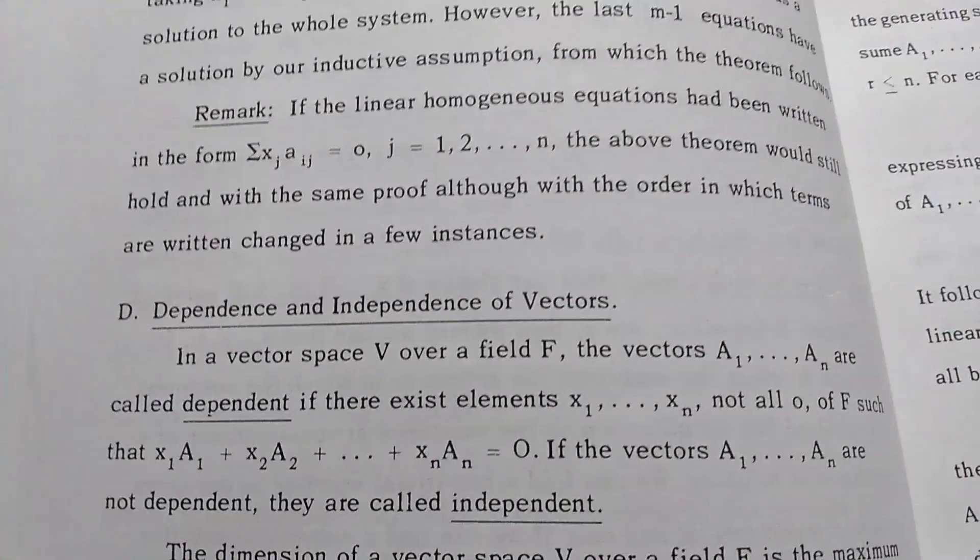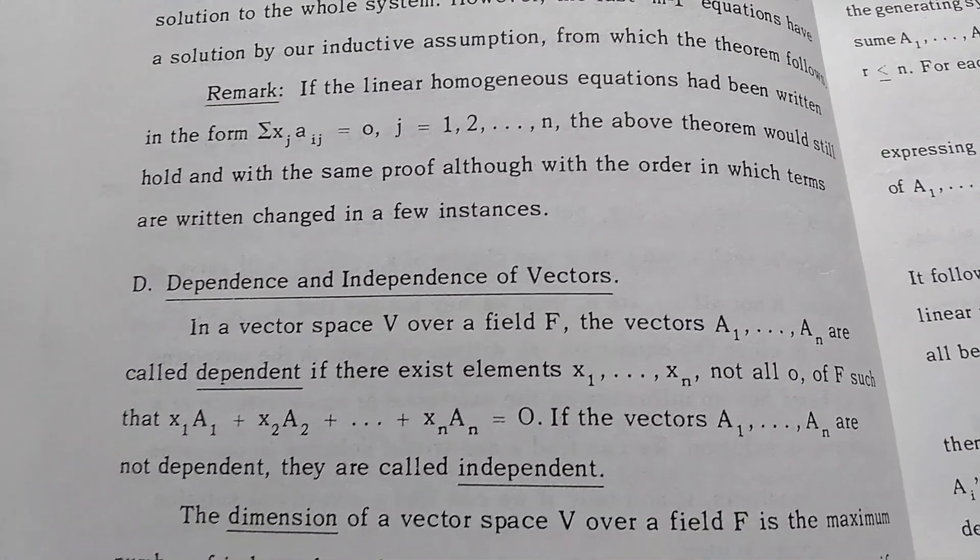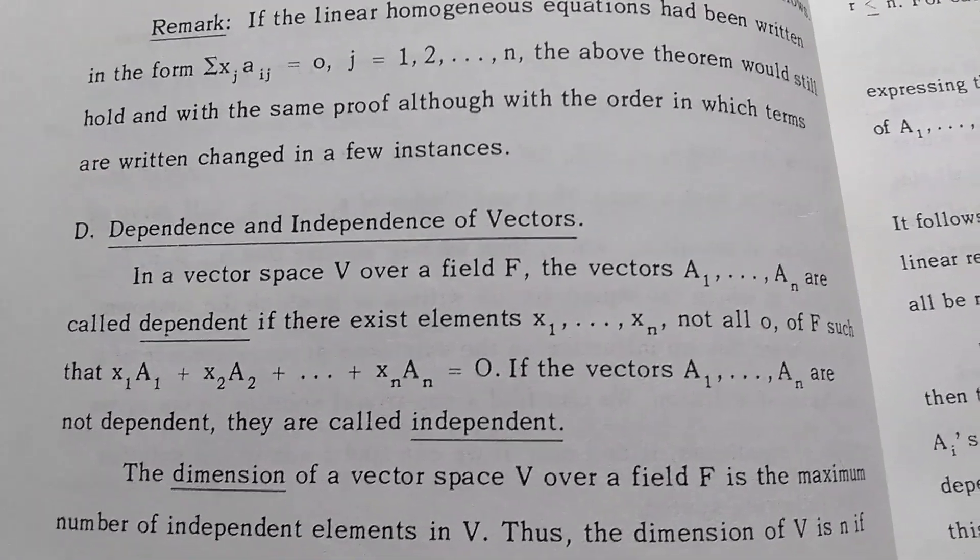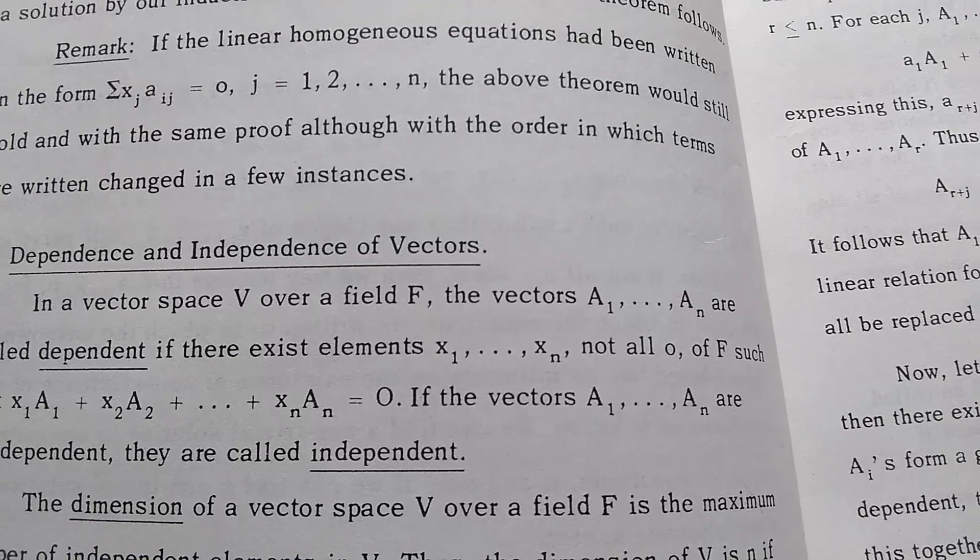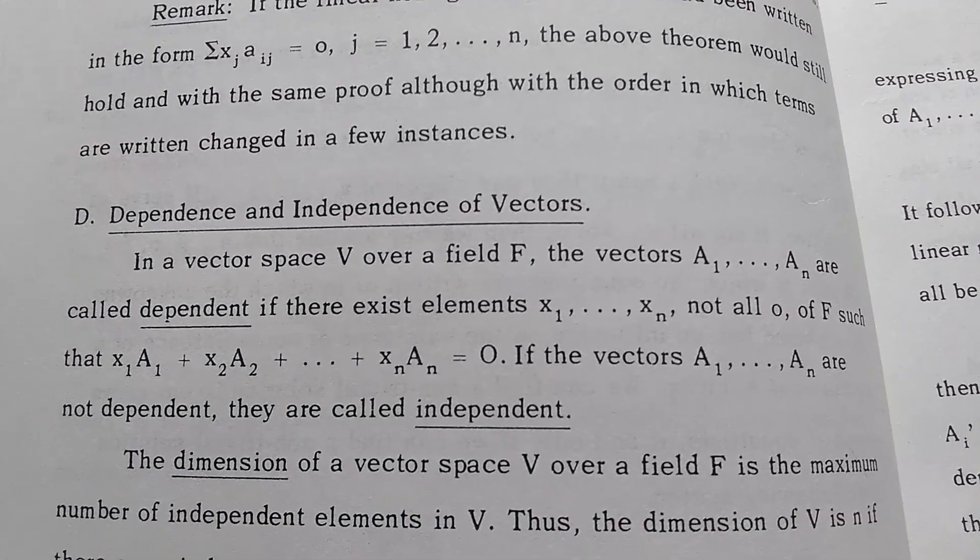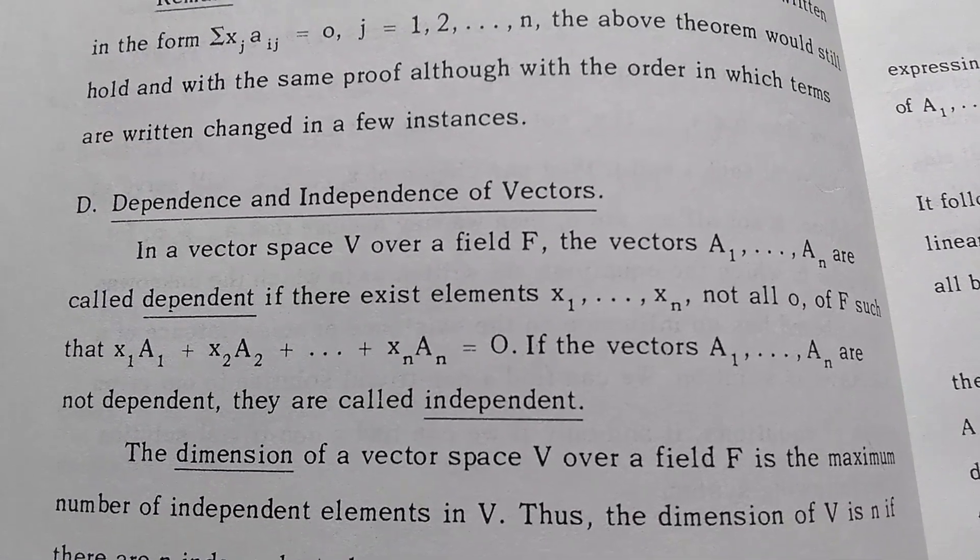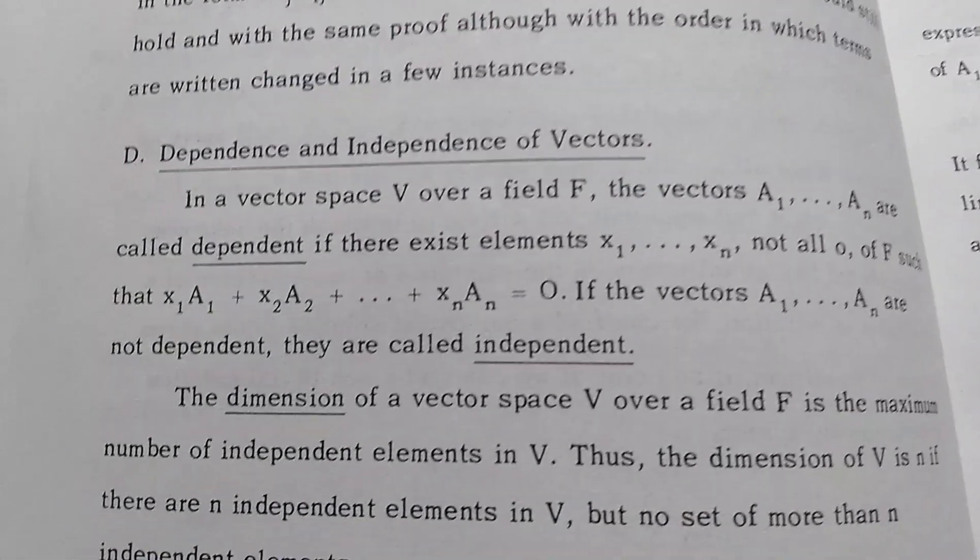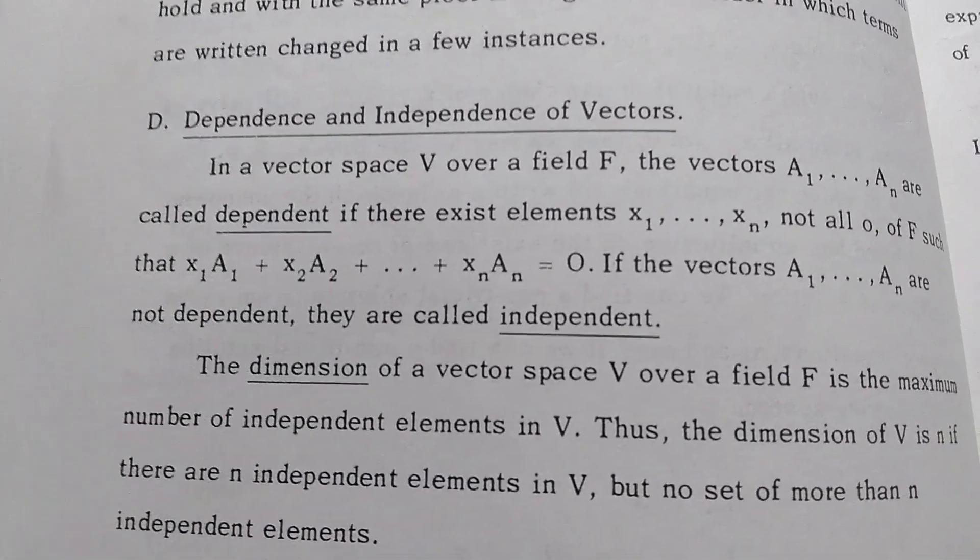This is page 4, where he defines dependence and independence of vectors. In a vector space V over a field F, the vectors a₁ through aₙ are called dependent if there exist elements x₁ through xₙ, not all 0, of F, such that that linear combination equals 0.